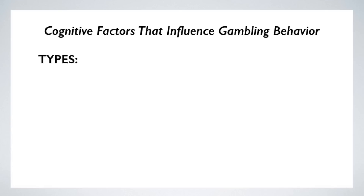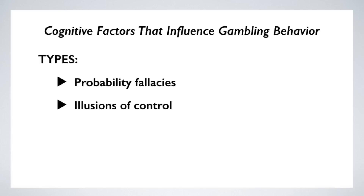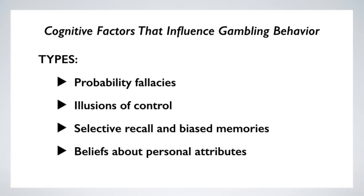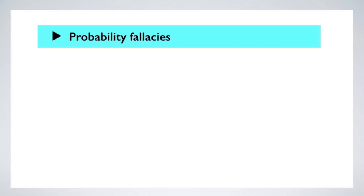These cognitive factors can be categorized in different ways. One factor at play are probability fallacies, which involve erroneous beliefs about the behavior of random devices and random sequences. Another factor are beliefs and behaviors sometimes grouped under the heading of illusions of control, involving beliefs that a gambler has greater control over the outcomes of a random trial than they actually do. Gamblers can also be prone to selective recall and biased memories. And then there are beliefs about personal attributes correlated with gambling success, like believing some people are lucky or that certain ritual behaviors can influence success at the gambling table.